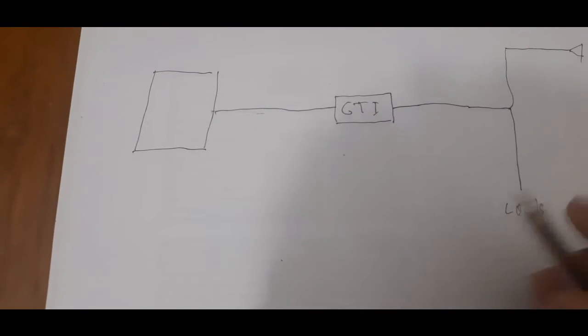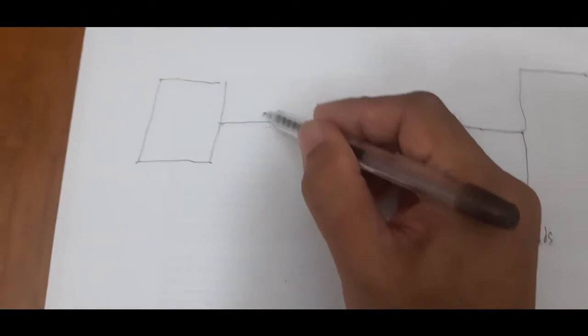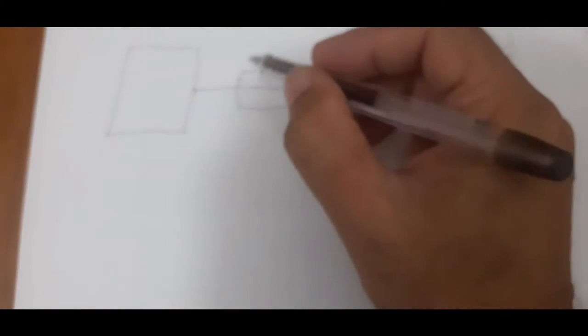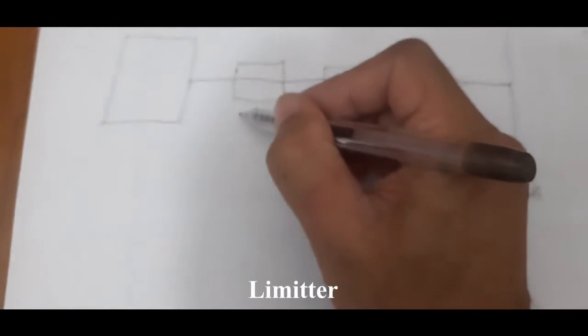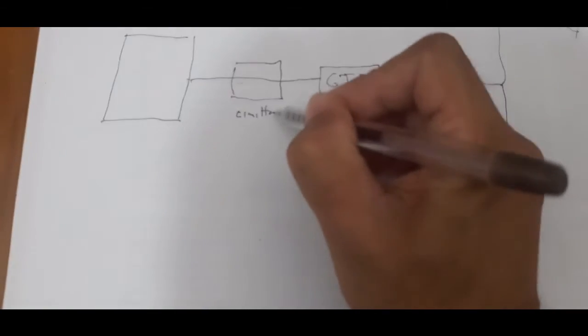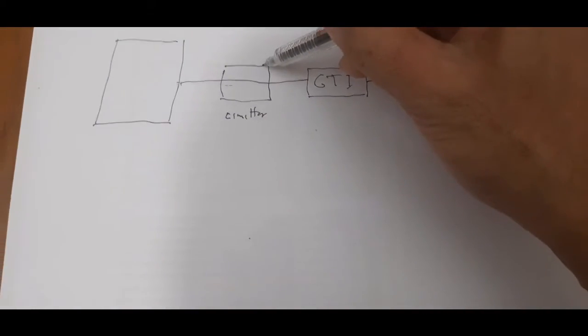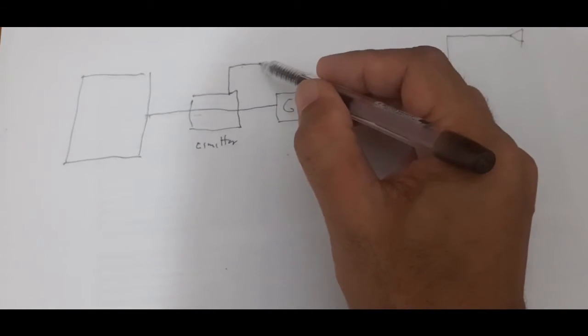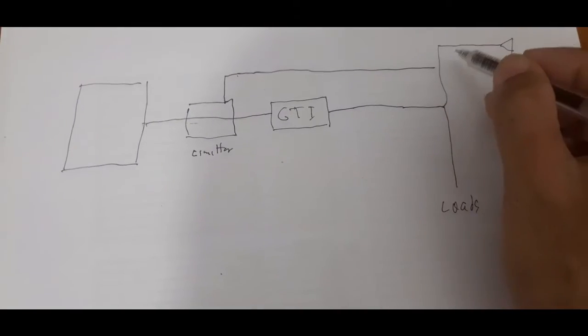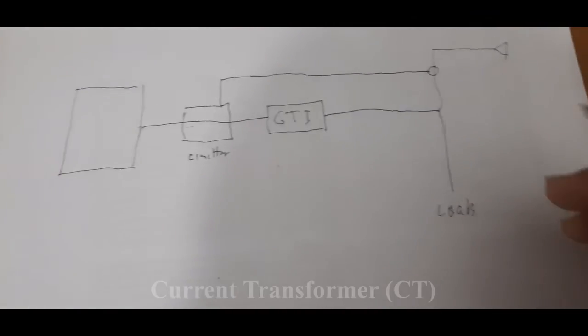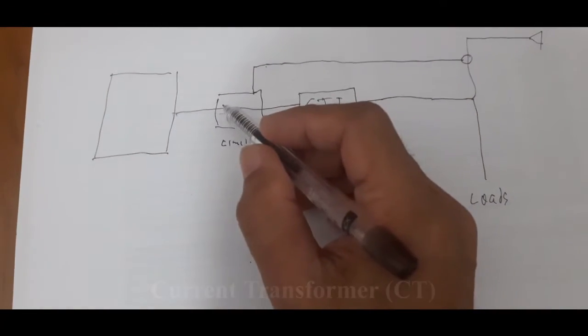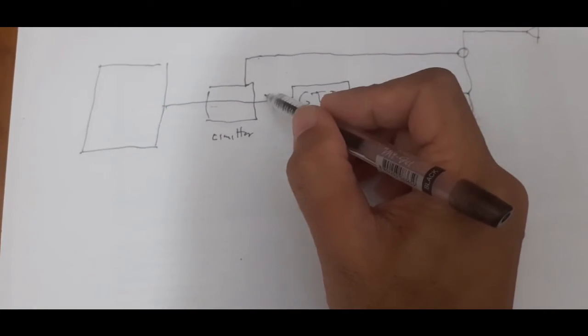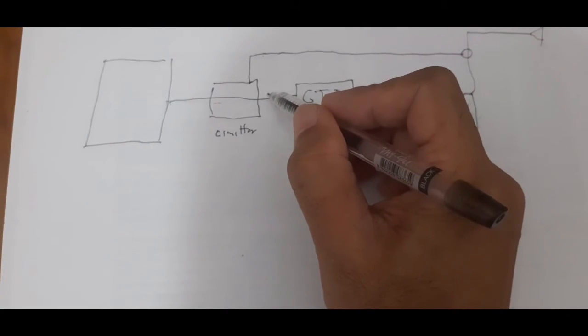So what I want to do is to put a device here. This is the limiter. This will monitor the current here using the current transformer, and this will control the feed of the power going to the grid tie inverter.